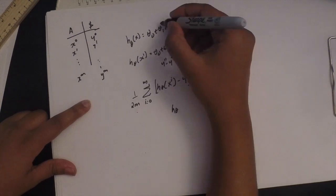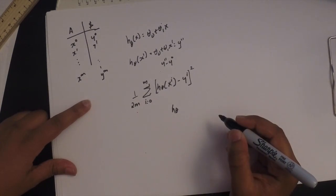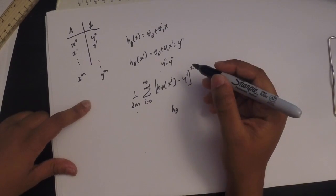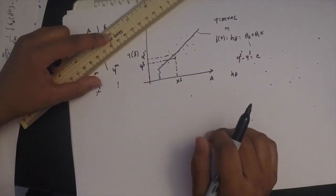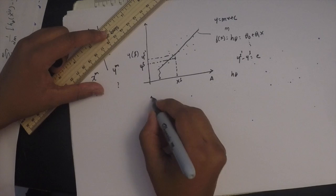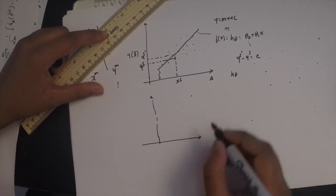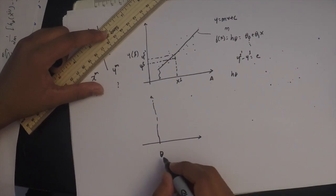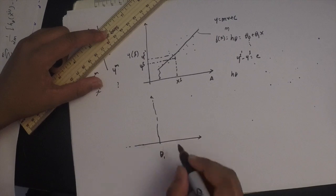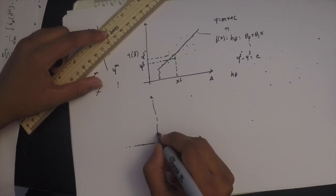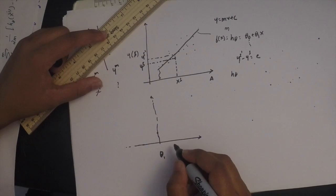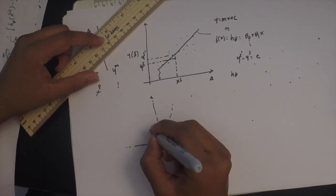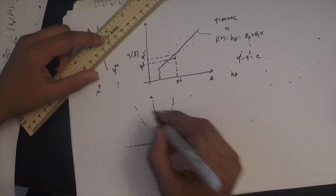Now we can vary both dimensions — theta naught and theta1 — but we'll make a separate video for that. If I were to plot my errors on a new graph, keeping theta naught as a constant and varying theta1, then for some value of theta1 I'm going to get an error which is the least. As you deviate from that theta1, you keep increasing your errors. So it's going to be like a parabolic equation, and this is your error curve.